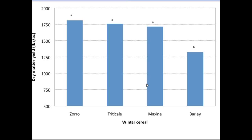When looking at the different grain varieties — two wheats (Zorro and Maxine), triticale, and winter barley (Thoroughbred) — the wheat and triticale yielded the same, while barley yielded significantly less. That's most likely due to losing a good portion of the barley through winter kill, resulting in fewer plants and therefore less yield.